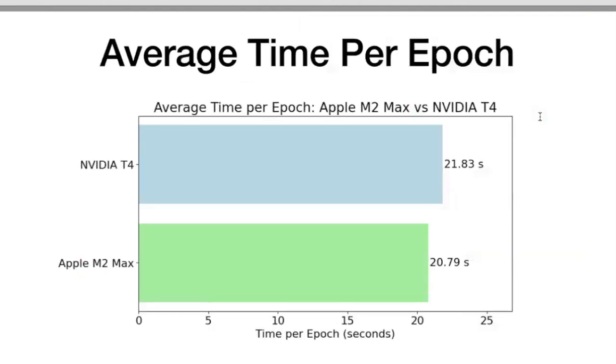The training process on both devices was timed to determine the average duration per epoch. The result, Apple M2 Max completed each epoch in an average of 20.79 seconds, whereas the NVIDIA T4 took about 21.83 seconds per epoch.